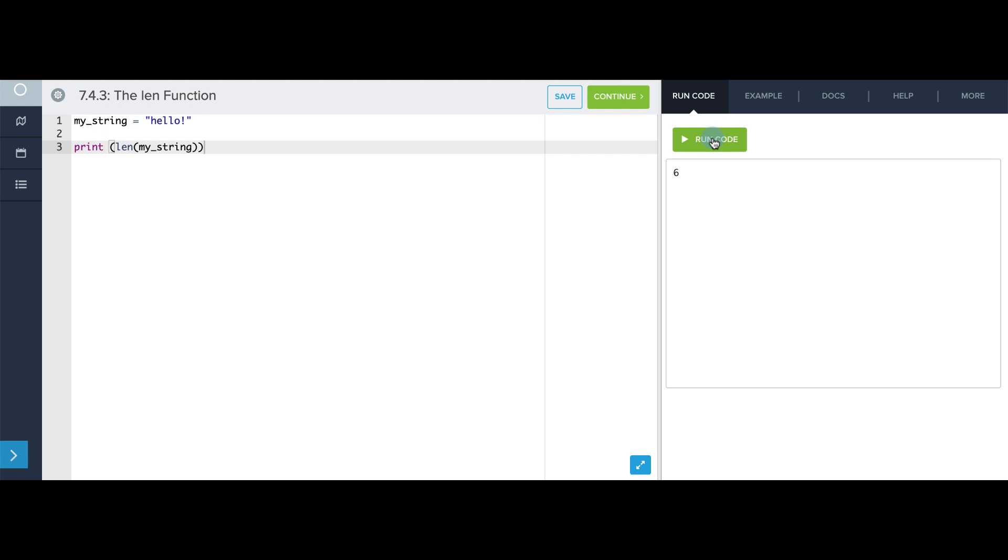Now I want to reiterate that we can't use 6 as an index. The highest possible index into this string is actually 5. So if I store this in a variable called length, and then I try to print my_string at index length, this will try to access my_string at index 6, and that will cause an error because the index is out of range. Now the highest possible index that I could use is actually length minus 1, and this should print the last character of the string, the exclamation point.